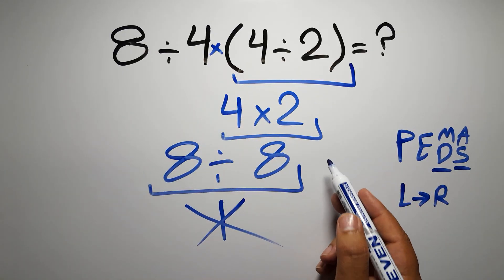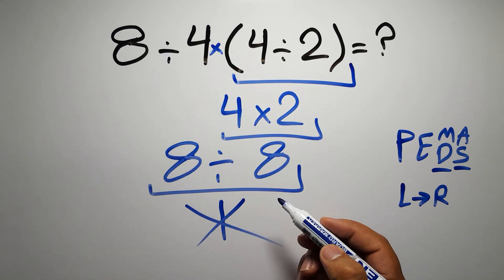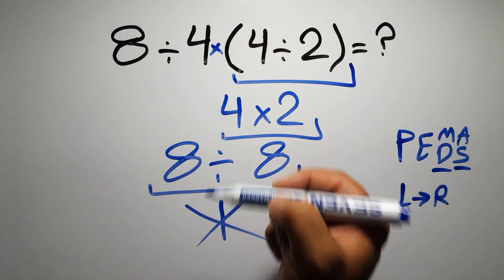Okay, so according to PEMDAS, first we have to do these parentheses, then this division, and finally this multiplication. If we do this multiplication before this division, it is wrong.